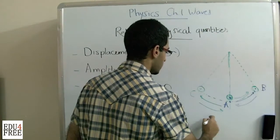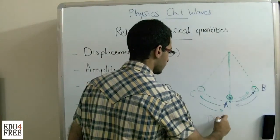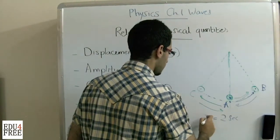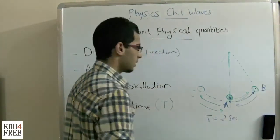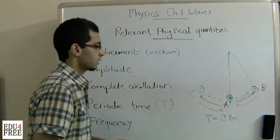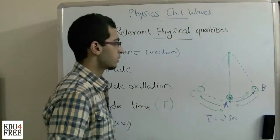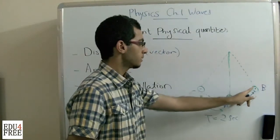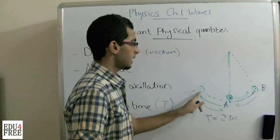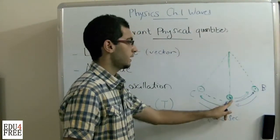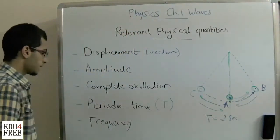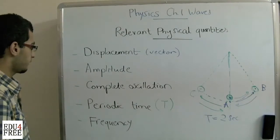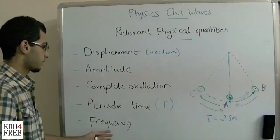For example, the periodic time here may be two seconds, in order to let the object move from A and return again. The last physical quantity we have is the frequency.